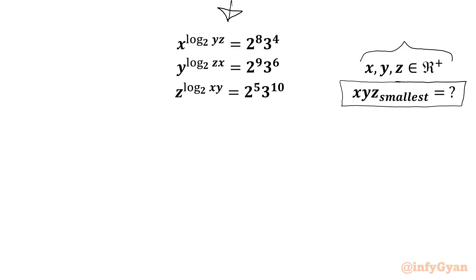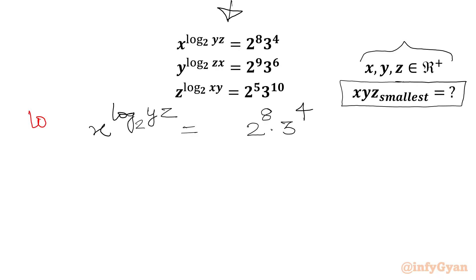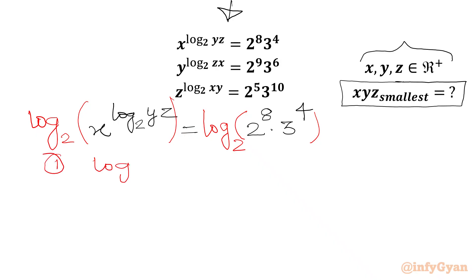Let's get started by writing X bar log Y, Z with base 2 equal to 2 power 8 times 3 power 4. This is our first given equation. Now we are going to take log with base 2 on both sides. We will use two properties from log: first, log AB equal to log A plus log B, which we are going to apply in the LHS.